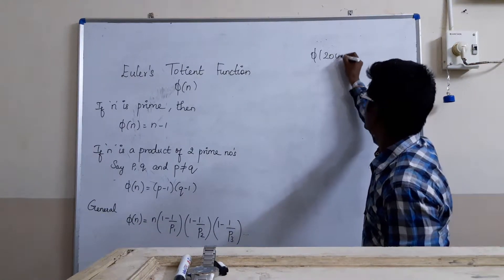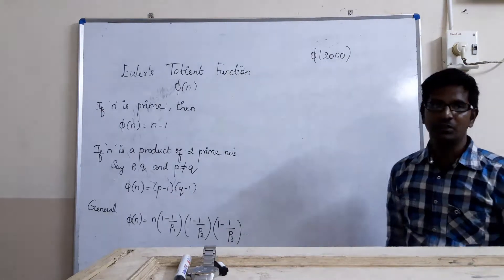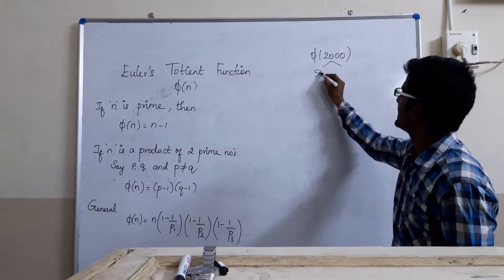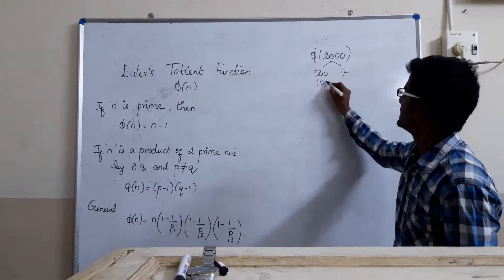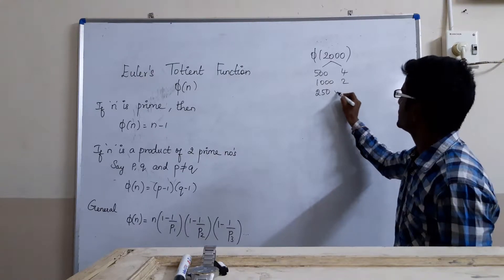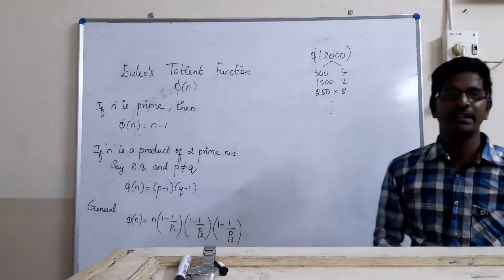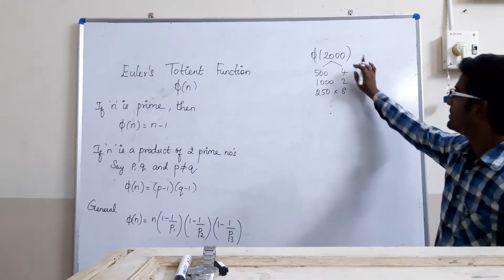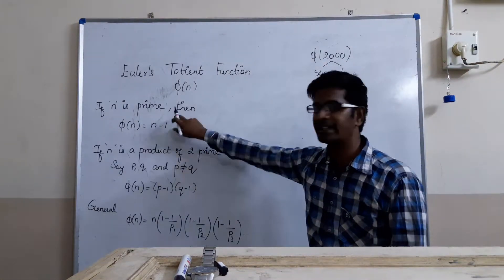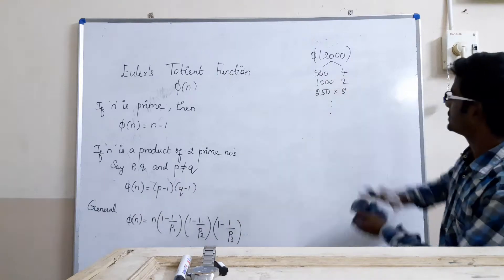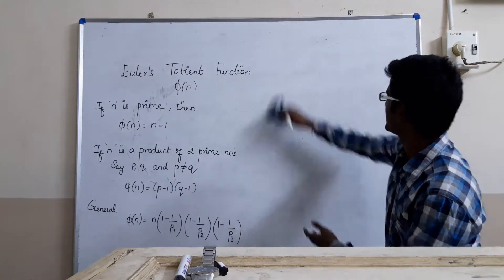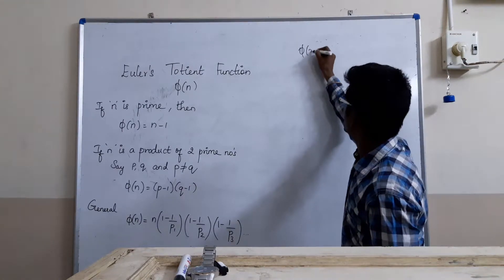For example, we will see phi of 2000. I want to solve this. If you see, 2000 is a product of 500 into 4, 1000 into 2, 250 into 8. So we have so many factors. But how to solve this? In this case, these two criteria are not matching. So how to solve this?